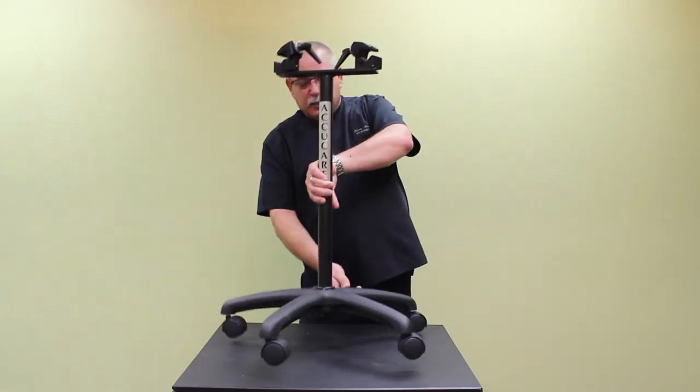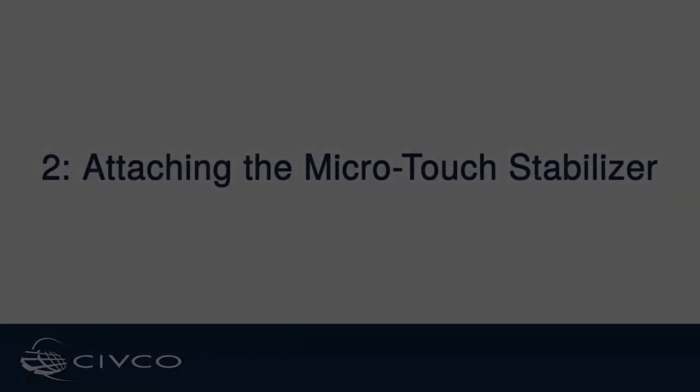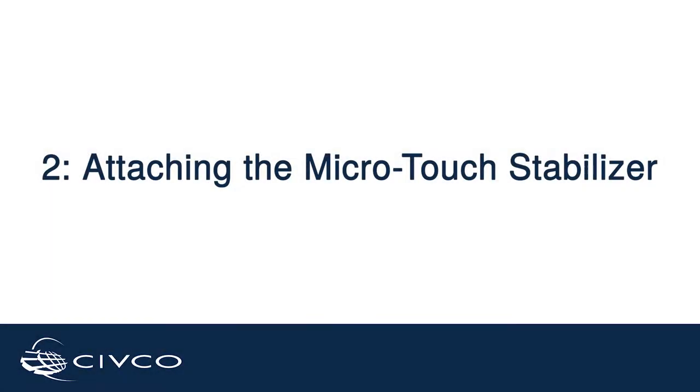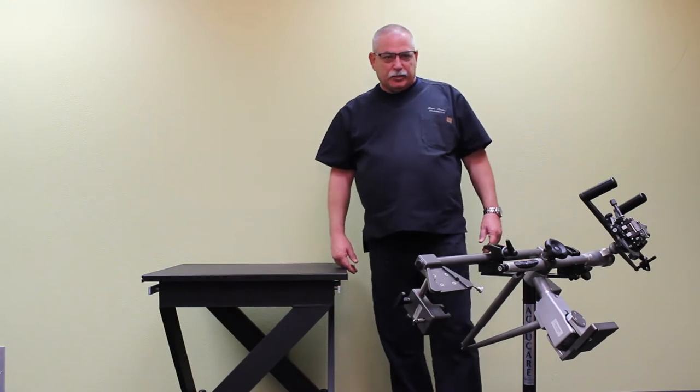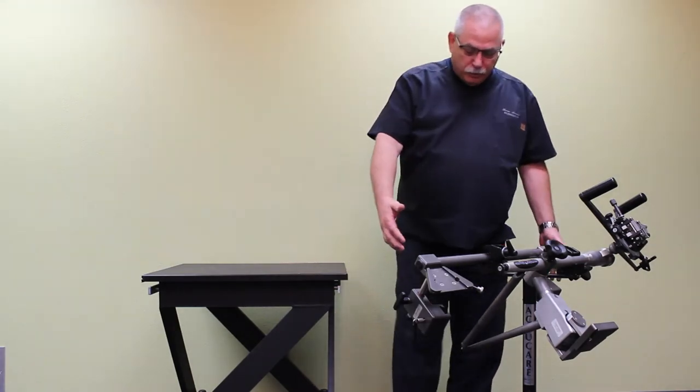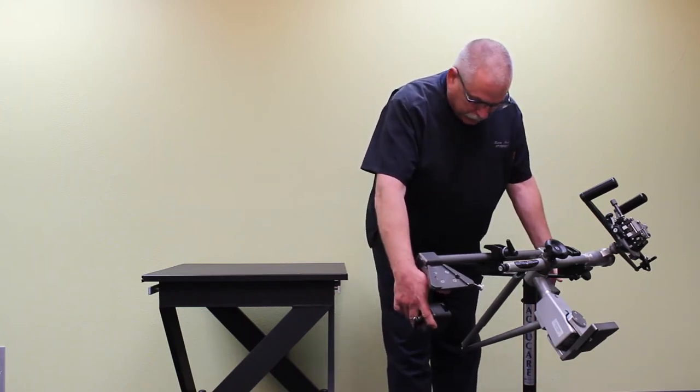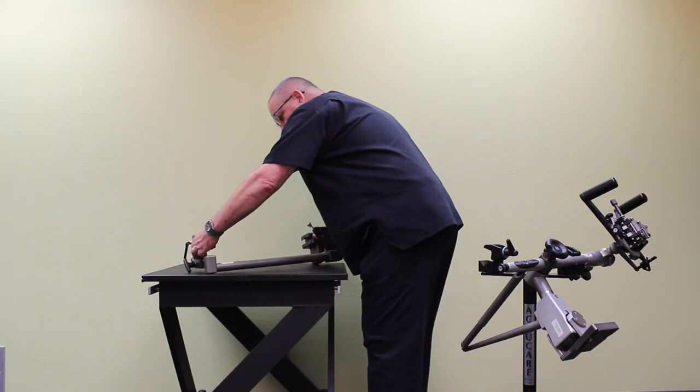And that's all there is to it. Your transportation stand is now assembled. Now we'll demonstrate the Microtouch Dual Sided Table Mount. First, we'll want to remove from the transportation stand the actual part that will mount onto your table.